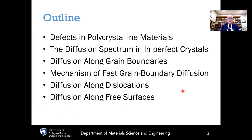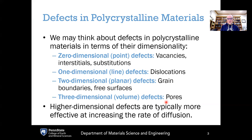What we're going to cover is first the different types of defects that occur in polycrystalline materials. Then we're going to cover the diffusion spectrum in imperfect crystals. This allows for fast grain boundary diffusion, fast diffusion along other crystal imperfections such as dislocations, and we're going to cover each of those individually. So let's get started.